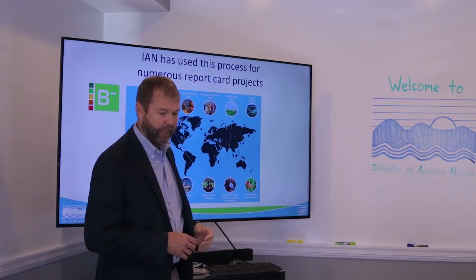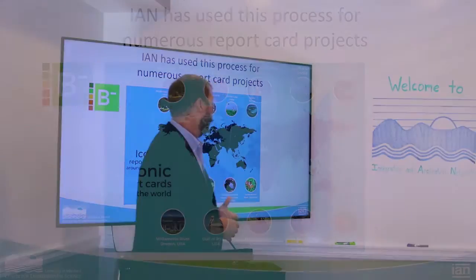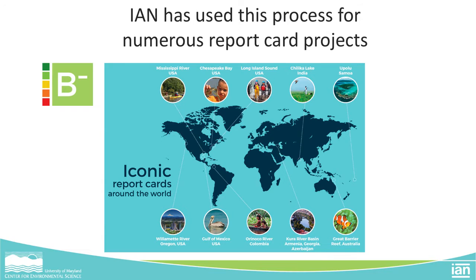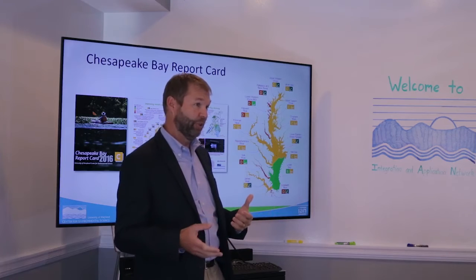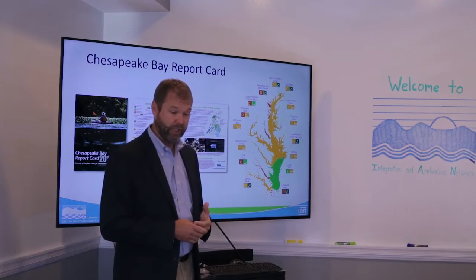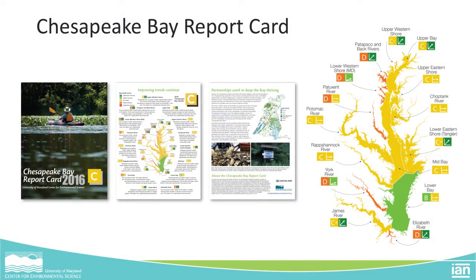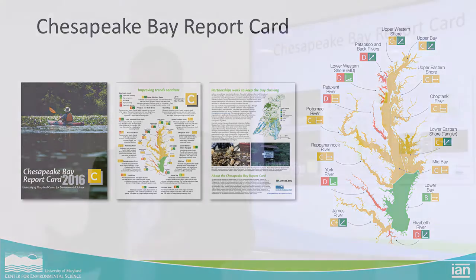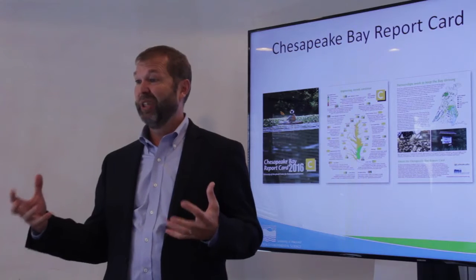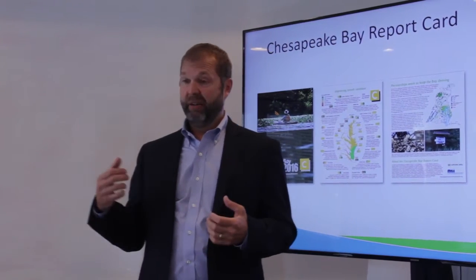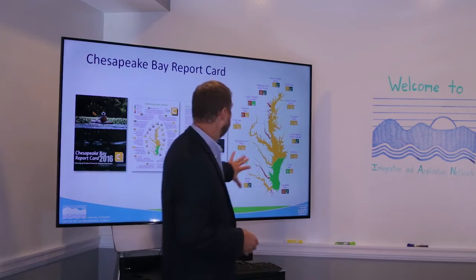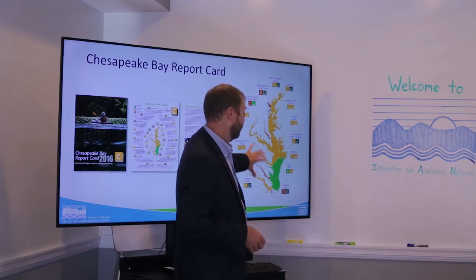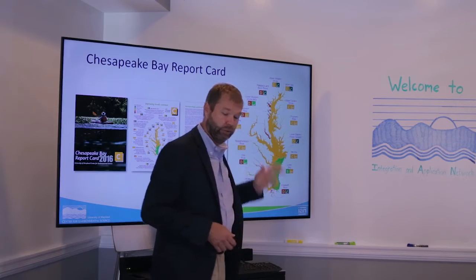We've done this in numerous locations around the world. I'm going to talk about a couple of these: Chesapeake Bay, Mississippi River, and the Orinoco River. The first one we did in the US was brought back from Australia by Bill Dennison. We're now in our 11th year of the Chesapeake Bay report card, and it is focused on ecosystem health — with indicators for water quality, habitat, and food web dynamics. We can present results for 15 different regions within the Chesapeake Bay, all the way back to the mid-1980s.